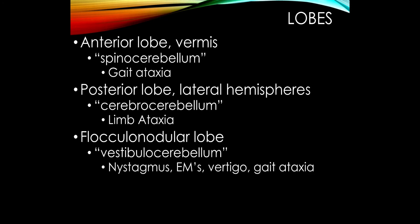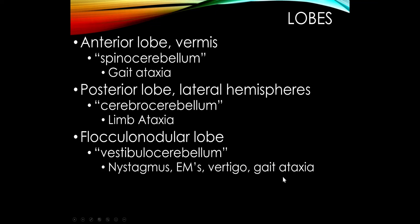The flocculonodular lobe is sometimes referred to as the vestibulocerebellum because it's very important for eye movements. A lesion there will give the patient nystagmus or some eye movement abnormality. Anything that disrupts the vestibular circuitry — whether in the inner ear, the vestibular nuclei, or the flocculonodular lobe — will cause patients to have vertigo, and it's hard to walk if you have vertigo, so they'll also have gait ataxia.